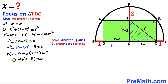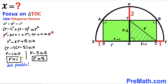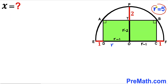Breaking these factors down: r − 1 = 0 gives r = 1, and r − 5 = 0 gives r = 5. We can see r = 1 is not feasible, so we reject it and accept r = 5. Therefore our radius r is 5 units. So height OT = r − 2 = 5 − 2 = 3 units.